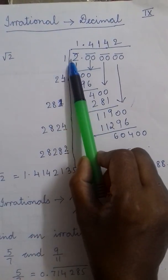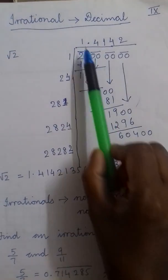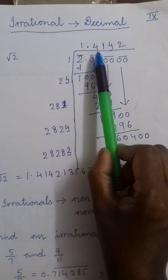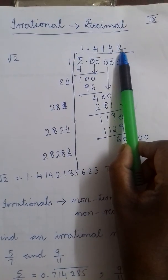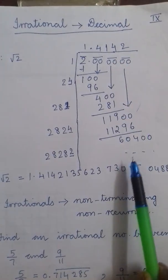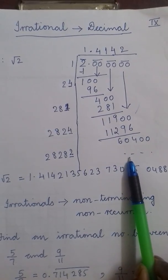So by performing this division step by step, I have got 1, 2, 3, 4 decimals. Still the numbers are continuing.